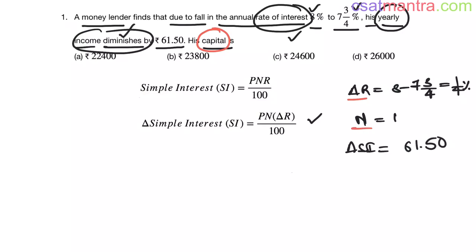Now, putting all these values in this equation, change in simple interest that is 61.50. P we do not know. N is 1. Delta R 1/4 by 100. So P by 4. P into 1 into 1/4 is P by 4.